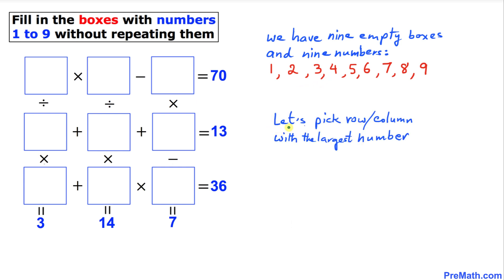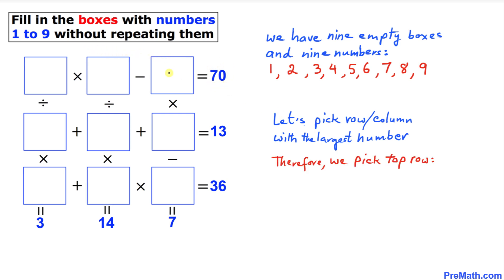Here's our strategy: let's pick a row or a column with the largest number. As we can see, this number 70 is the biggest one, so therefore we are going to pick this top row.